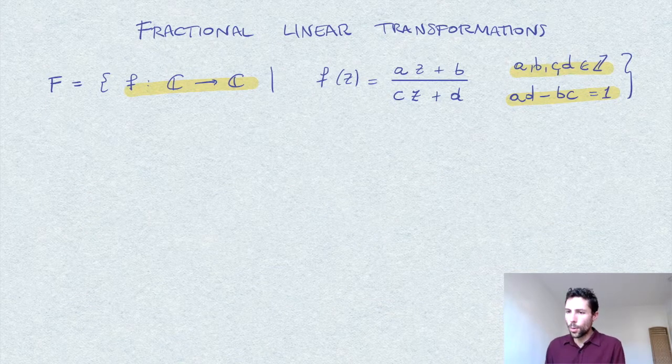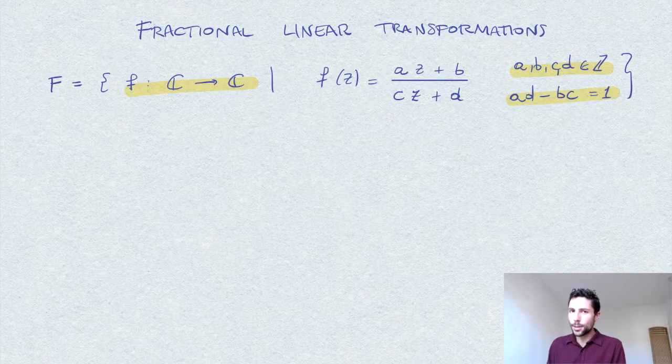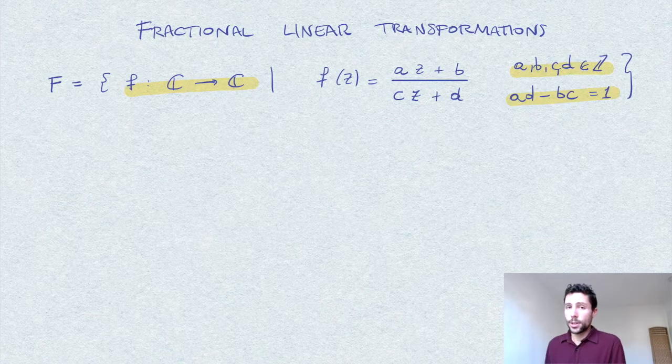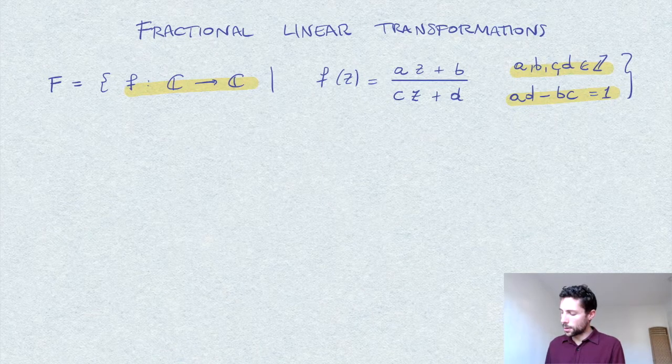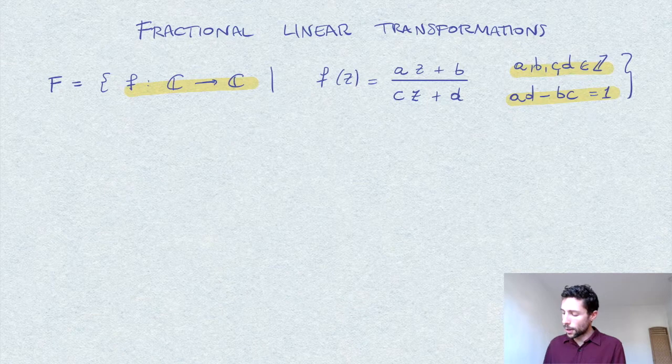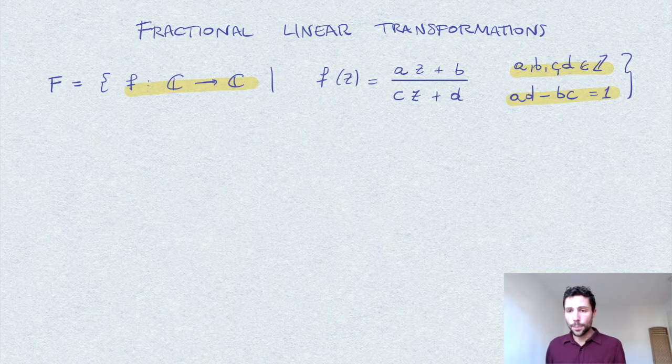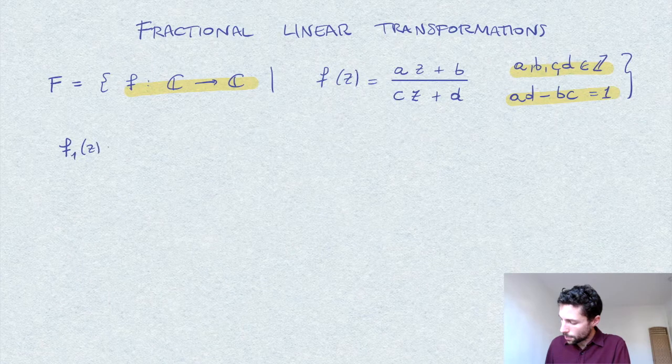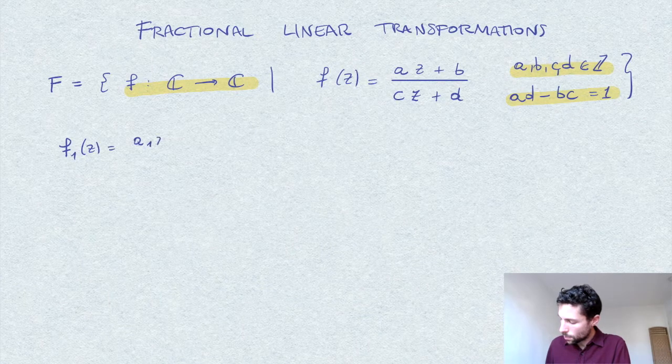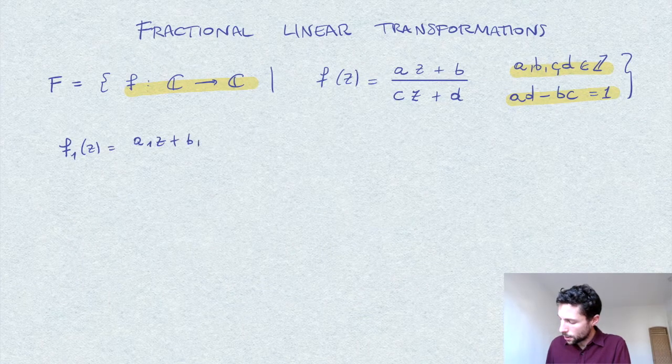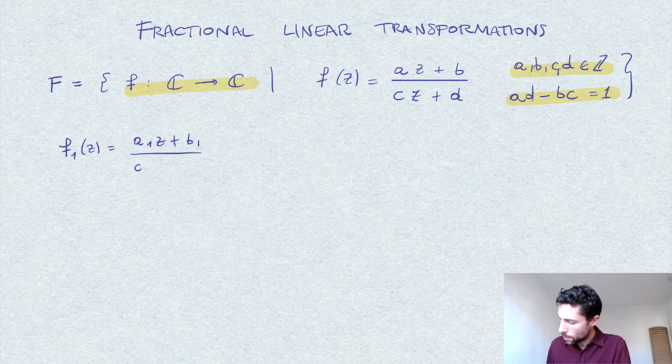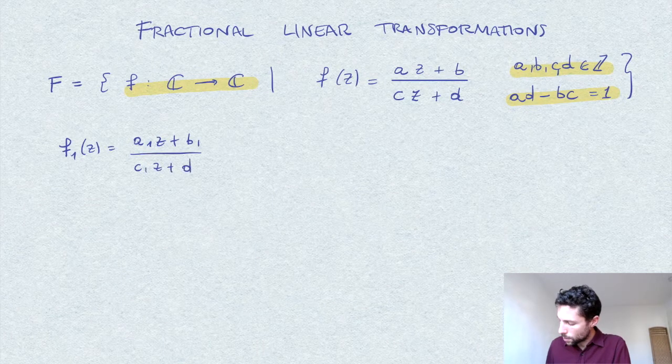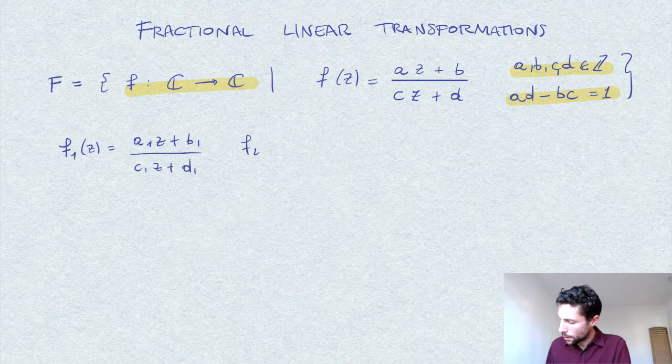We want to do this in the least painful way. The first thing I would do by looking at this expression is to take two functions of this form, namely f₁(a) = a₁z + b₁ over c₁z + d₁, and f₂.